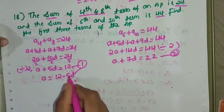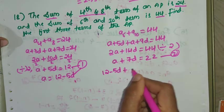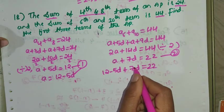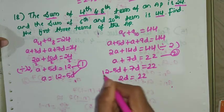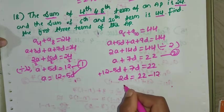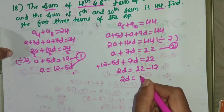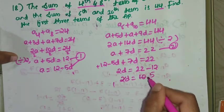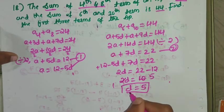Substituting A = 12 - 5D into equation 2: (12 - 5D) + 7D = 22. So 7D - 5D = 2D, and 12 becomes minus 12. Thus 2D = 22 - 12 = 10, which gives D = 5.